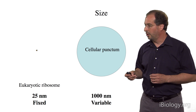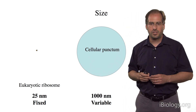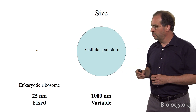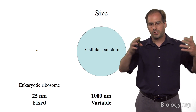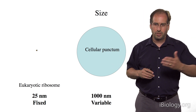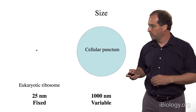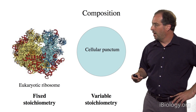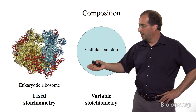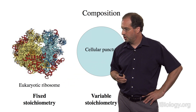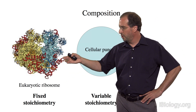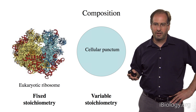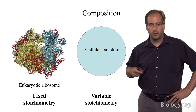Perhaps even more importantly, not only are macromolecular complexes much smaller, but their size is fixed by the components that compose them. Whereas these cellular puncta have highly variable sizes — sometimes small in cells, sometimes large — and they can transition from large to small in response to different perturbations. The composition is also very different: macromolecular complexes are usually of fixed stoichiometry, whereas the composition of these cellular puncta is highly variable, with molecules going in and out — some molecules stay, some molecules go.